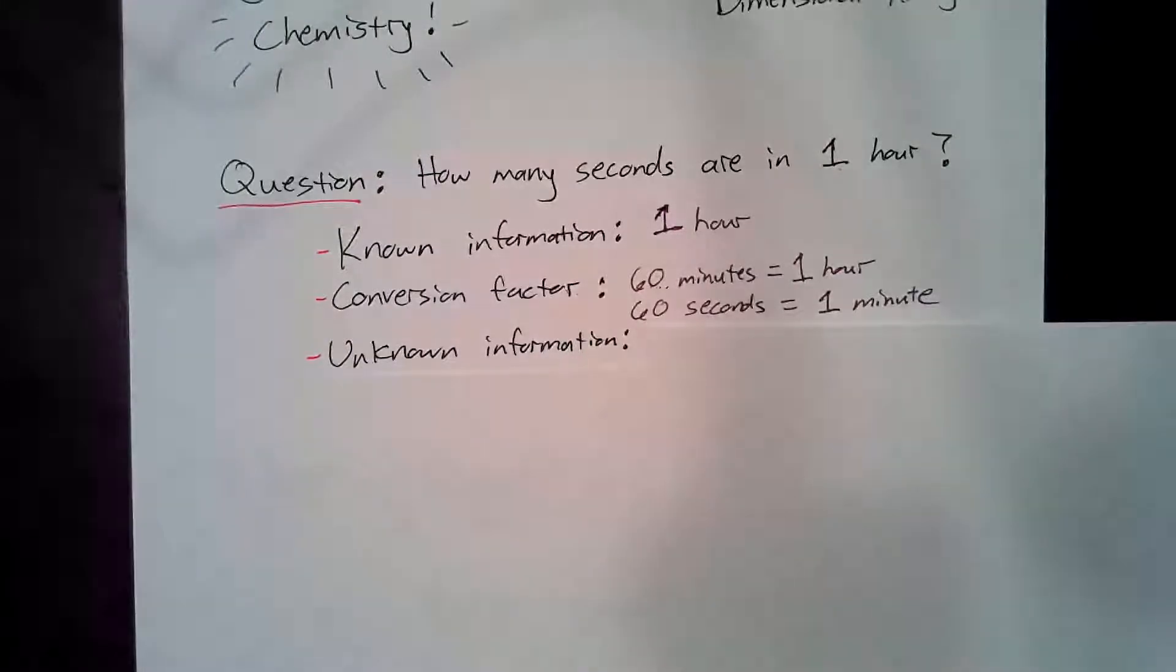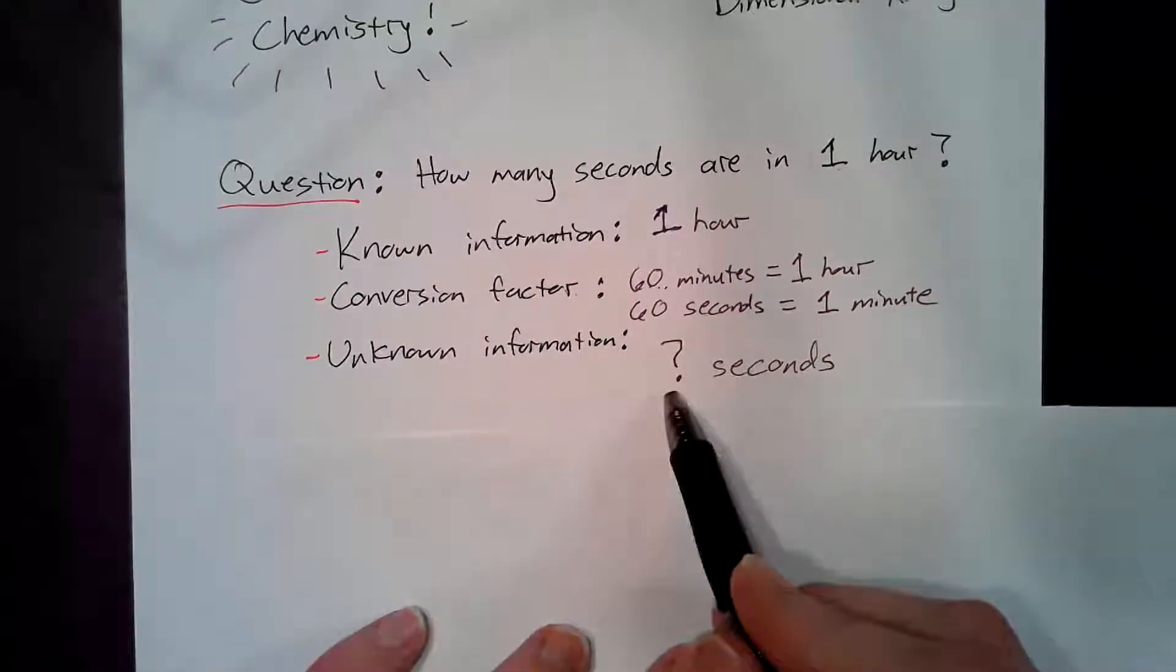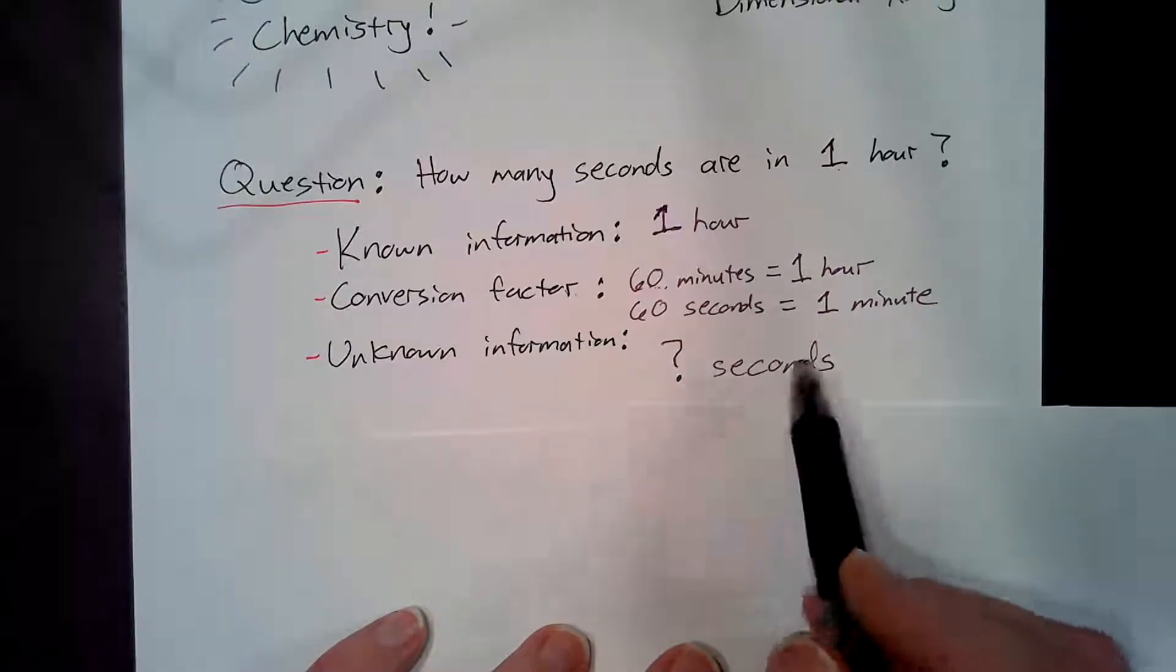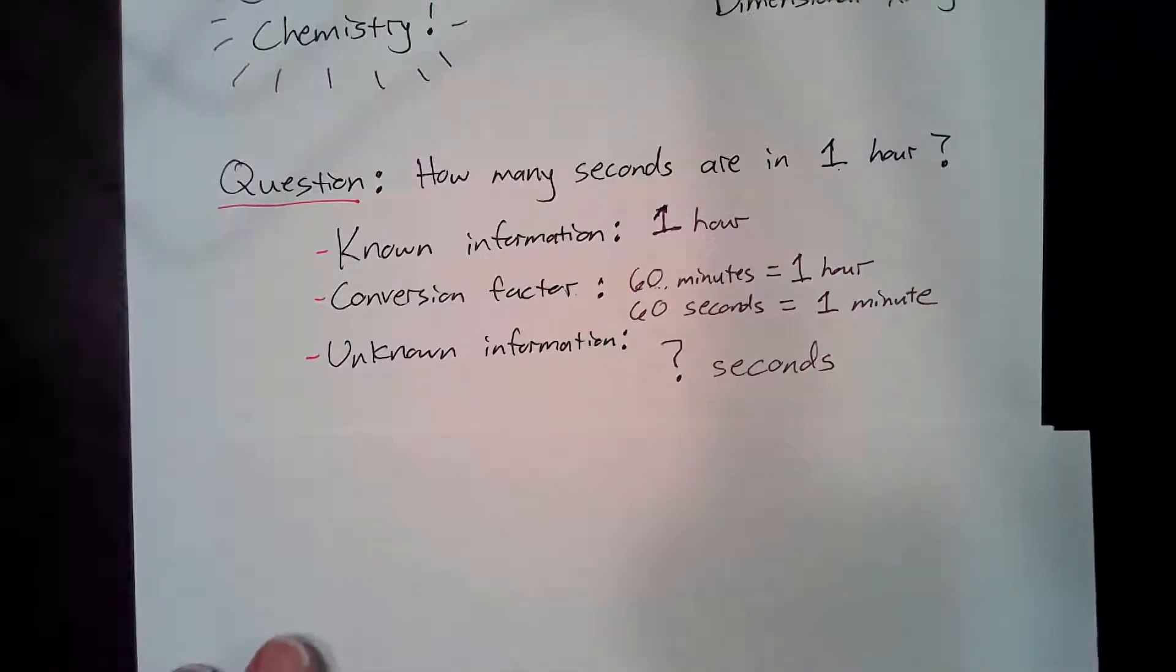And then we'll identify the unknown information, which is going to be the number of seconds. That usually does not have a number with it. So I like to write a question mark, and then my unit. It helps to know what unit we're going to have. So let's work one of these problems.